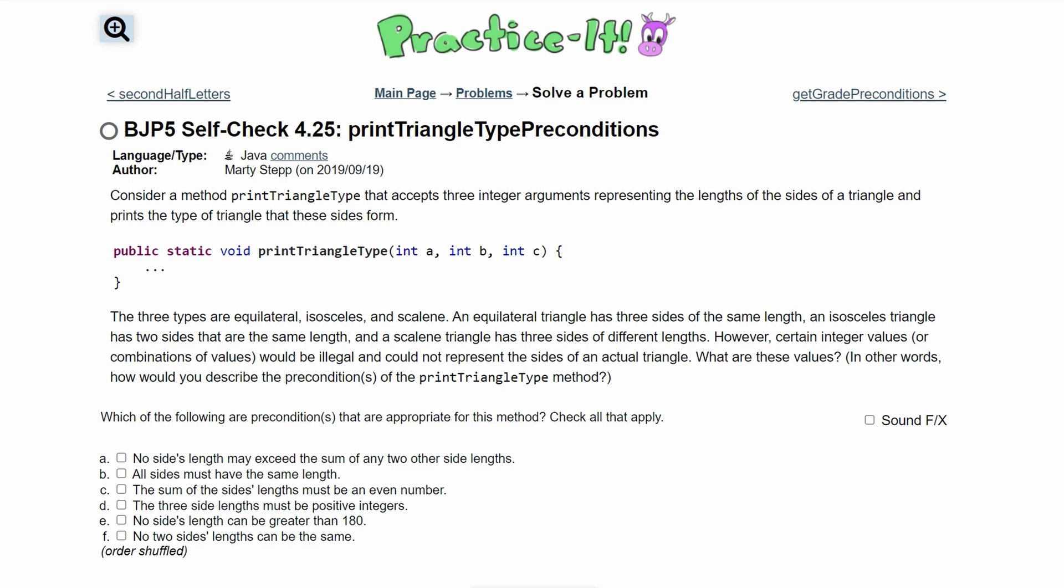So we have three types which are equilateral, isosceles, and scalene. An equilateral triangle has three sides of the same length. An isosceles triangle has two sides of the same length. And a scalene triangle has three sides of different lengths.